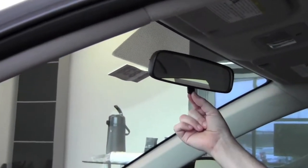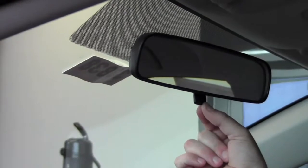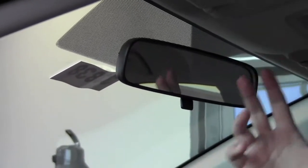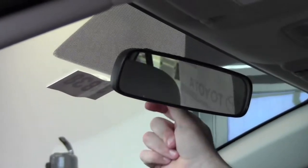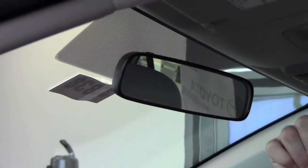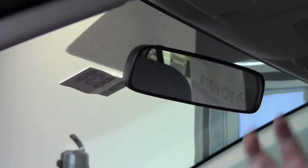You'll notice this tab at the bottom of your mirror, this is for dimming it. If you get into a situation where the lights behind you are too bright, you simply push the tab down, which allows you to still see behind you, but at the same time the lights won't be nearly as bright.